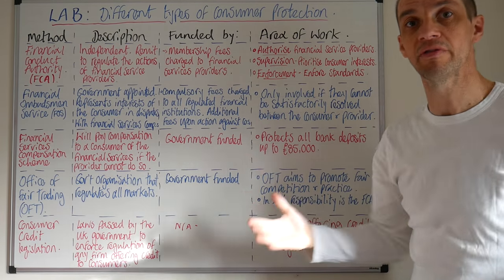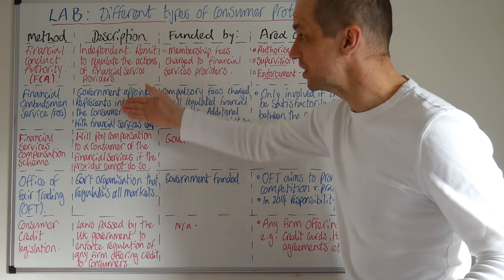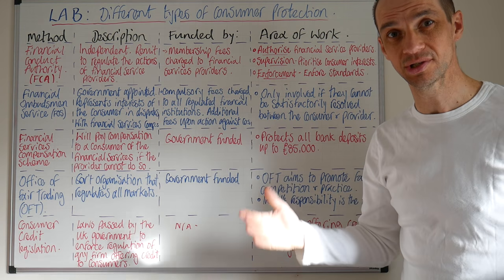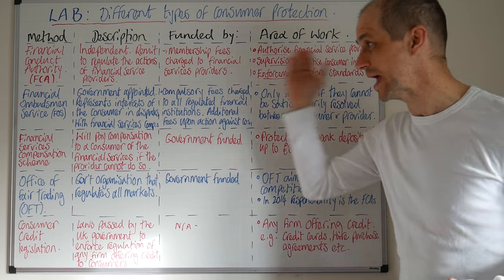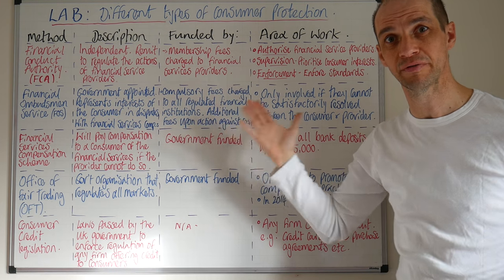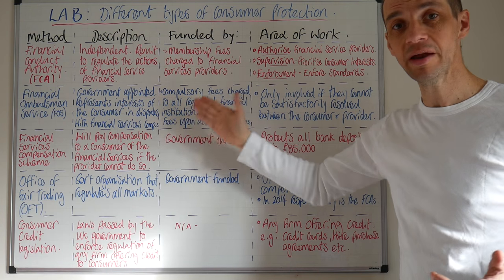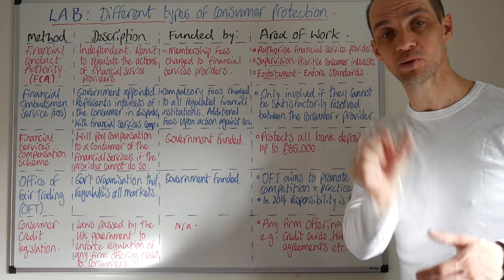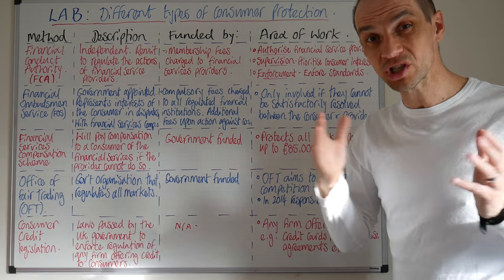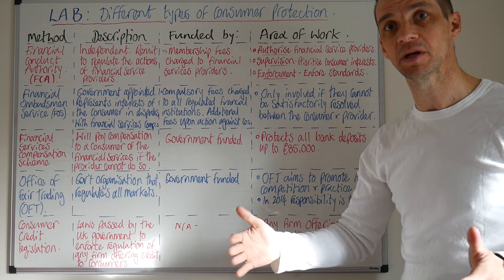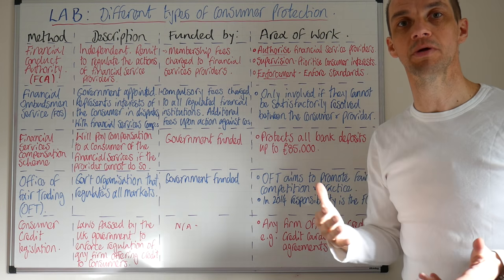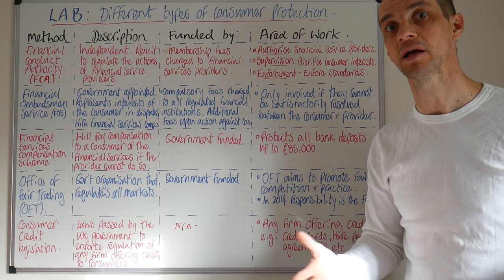Next up we've got the Financial Ombudsman Service. This is a government-appointed organisation which represents the interests of the consumer when the consumer has a dispute with a financial services provider. So when there is a dispute between an individual and their financial services provider which cannot be resolved by dealing with the customer care department and so on, then the Financial Ombudsman may well be contacted by that customer.